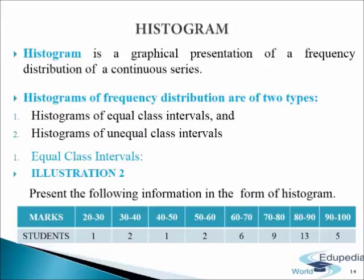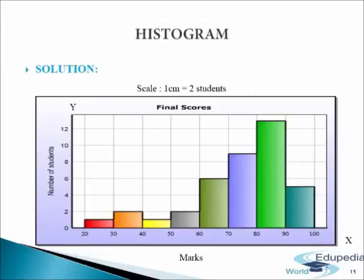Let us understand this with the help of the following illustration. We have to present the given information in the form of a histogram showing marks of students. For this particular diagram, we have taken scale 1 cm equals 2 students, and the diagram title is 'Final Scores'. On the x-axis we have taken marks, and on the y-axis we have taken number of students. Height of rectangle is equal to frequency of the corresponding class intervals: marks 20–30 frequency is 1, 30–40 frequency is 2, 40–50 frequency is 1, 50–60 frequency is 2, and so on. This is how we will prepare a histogram with equal class intervals.